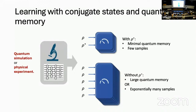However, if I don't have the complex conjugate state, even if I'm allowed entangled measurements on many copies of the original state, the sample complexity is exponentially worse. This was a surprise to us, and I think it shows how rich and complicated the landscape of these learning tasks and resources are. We're trying to convince you that this complex conjugate state is really like a new quantum resource that you can use in learning.